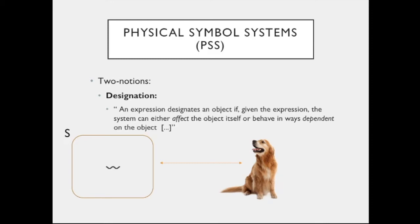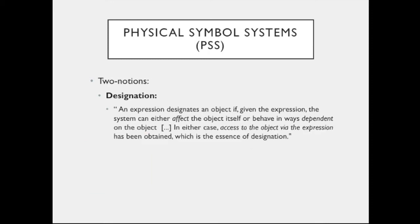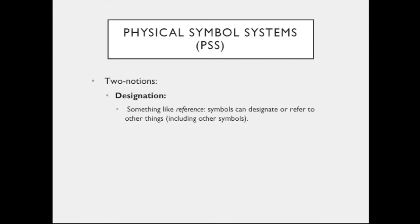It could designate another symbol structure or another process. In any case, access to the object via the expression has been obtained, which is the essence of designation. So symbols and symbol structures can serve as internal representations of the environment to which the symbol system is seeking to adapt, either inside or outside the system. Here we have something like the notion of reference, where a symbol can designate or refer to other things — it might be a dog, another symbol, a memory location, anything you can imagine.